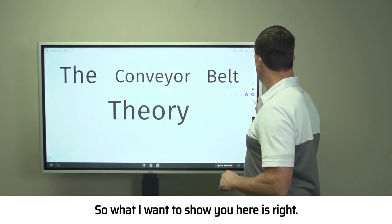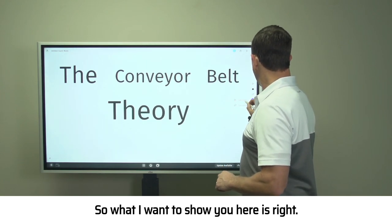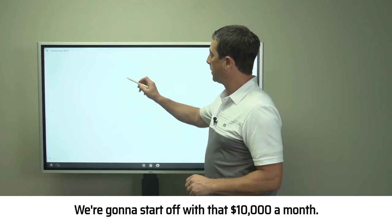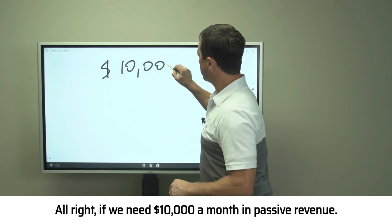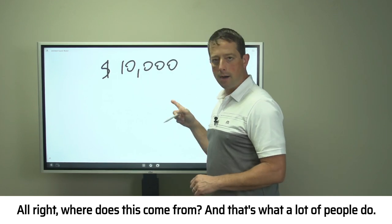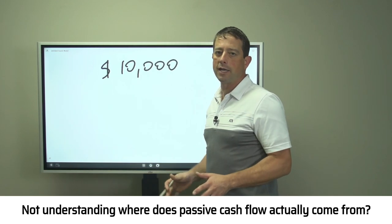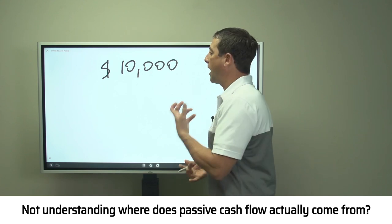We're going to start off with that $10,000 a month. If we need $10,000 a month in passive revenue, where does this come from? That's what a lot of people don't understand—where does passive cash flow actually come from?